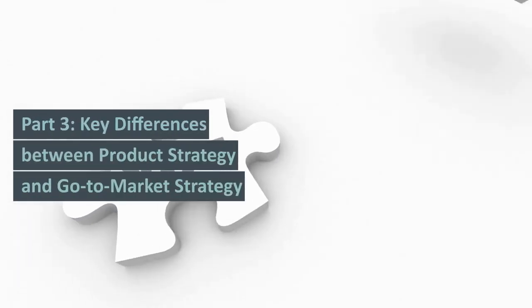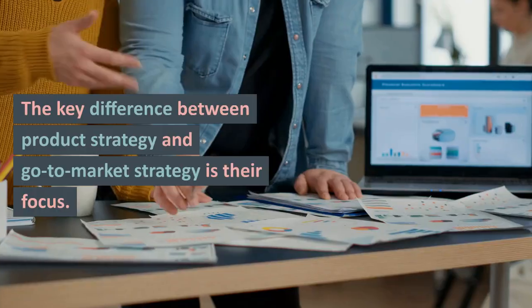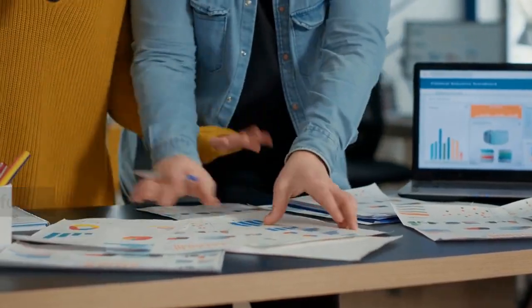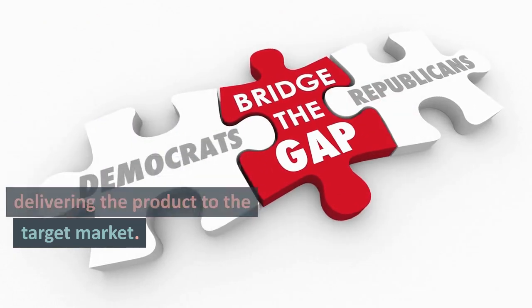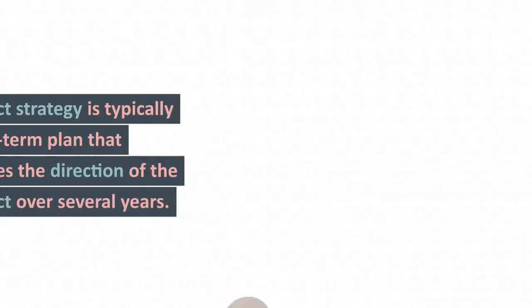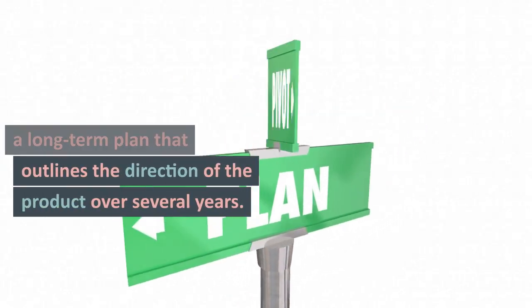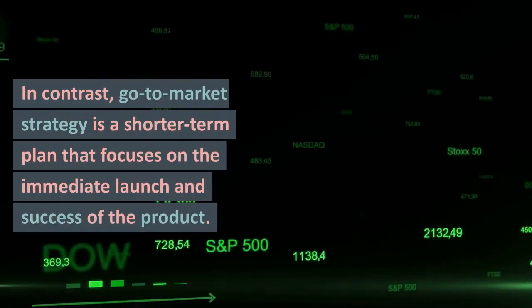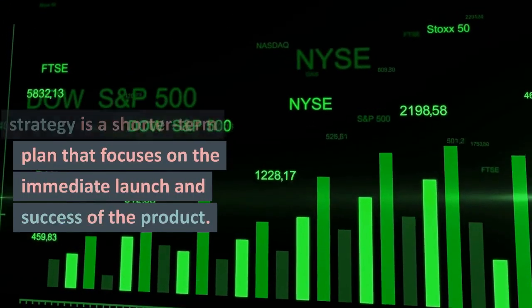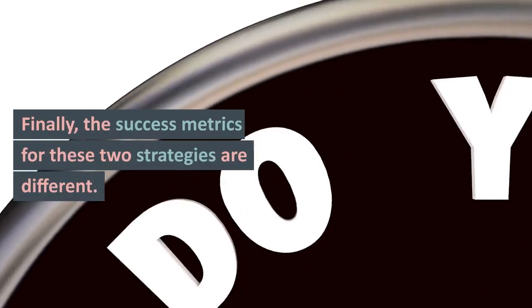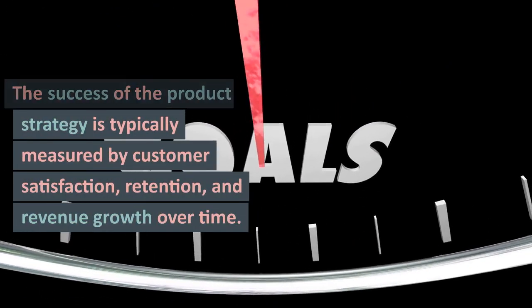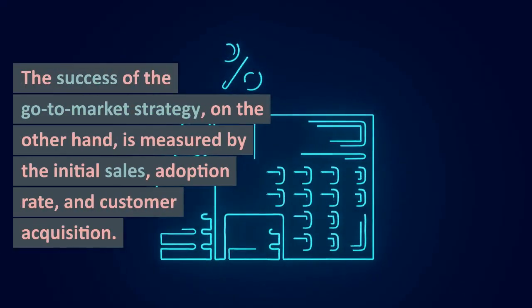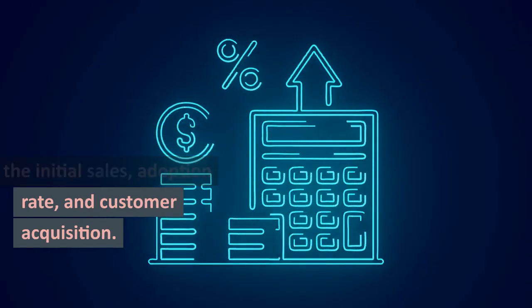Part 3: Key Differences Between Product Strategy and Go-to-Market Strategy. The key difference between product strategy and go-to-market strategy is their focus. Product strategy is focused on the development of the product, while go-to-market strategy is focused on delivering the product to the target market. Another key difference is the timeline. Product strategy is typically a long-term plan that outlines the direction of the product over several years. In contrast, go-to-market strategy is a shorter-term plan that focuses on the immediate launch and success of the product. Finally, the success metrics for these two strategies are different. The success of the product strategy is typically measured by customer satisfaction, retention, and revenue growth over time. The success of the go-to-market strategy, on the other hand, is measured by the initial sales, adoption rate, and customer acquisition.